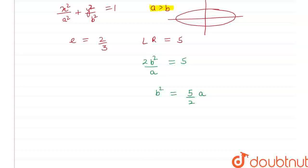And we also know that for ellipse where a is greater than b, my b square is equal to a square 1 minus e square. Here I have the value of b square which is equal to 5 upon 2a. And I also have the value of e which is 2 by 3. So my e square would be 4 upon 9.